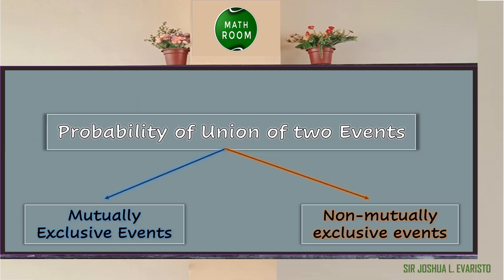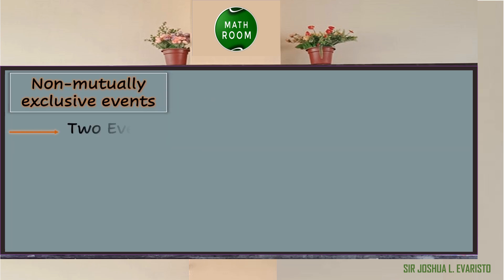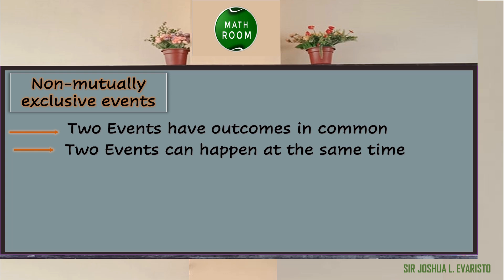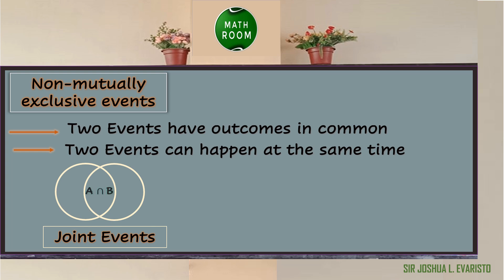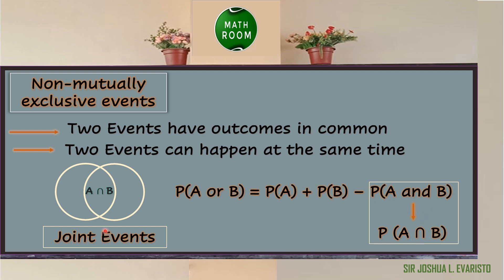After we discuss mutually exclusive events, let us talk about non-mutually exclusive events. Non-mutually exclusive events is completely different from mutually exclusive events, because the union of two events have outcomes in common, or the two events can happen at the same time. This is also referred to as joint events and can be illustrated using two overlapping circles, where the overlapping region is the intersection of the two events. In non-mutually exclusive events, the probability that A or B occurs is equal to the probability of A plus probability of B minus the probability of A and B.